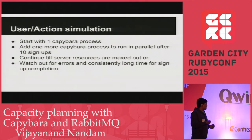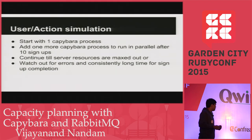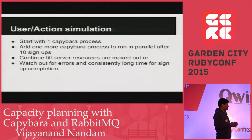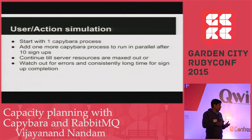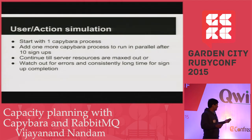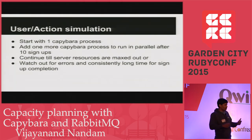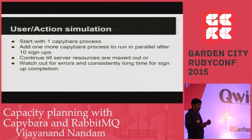We start with one Capybara process. We give a command to one of the nodes to start simulating the sign-up. Once it has done 10 sign-ups, we issue another command for another process to run simultaneously. After 10 more sign-ups, we have two Capybara processes running the sign-up process. We continue increasing the load at regular intervals until we see that the service is maxed out or has very long sign-up times.